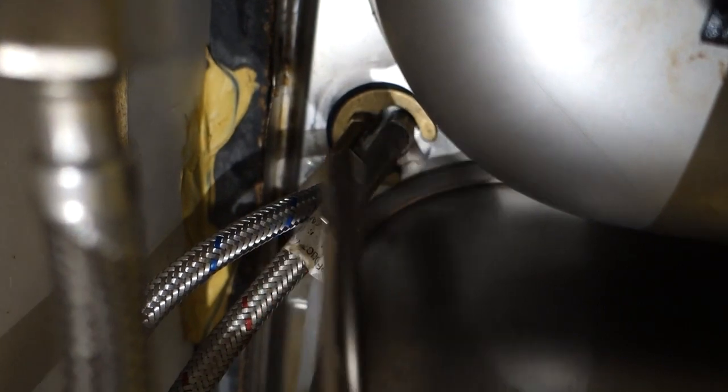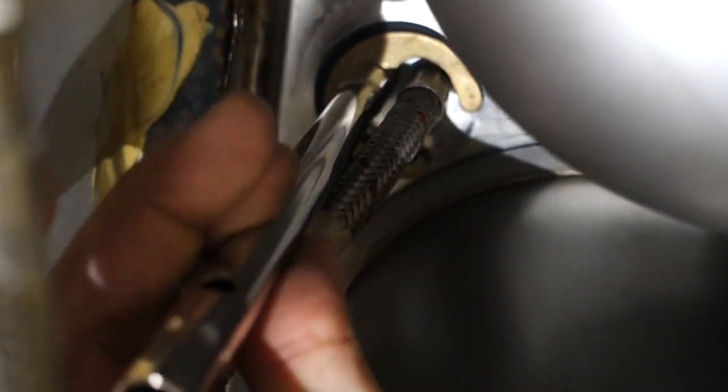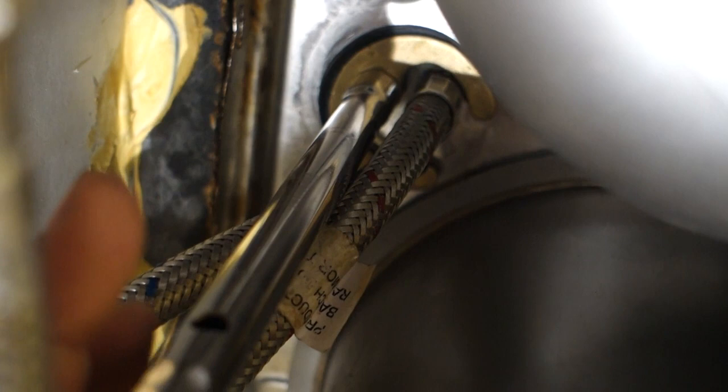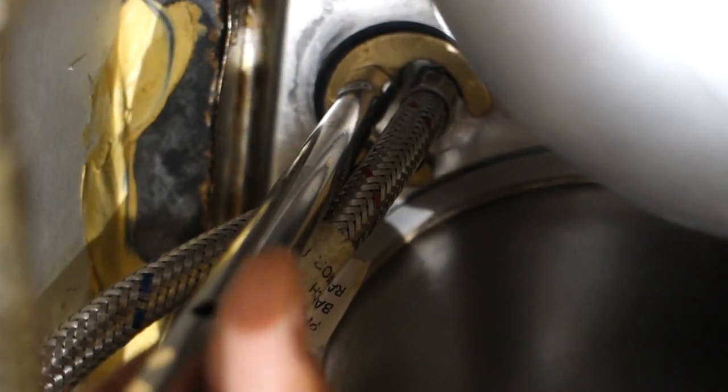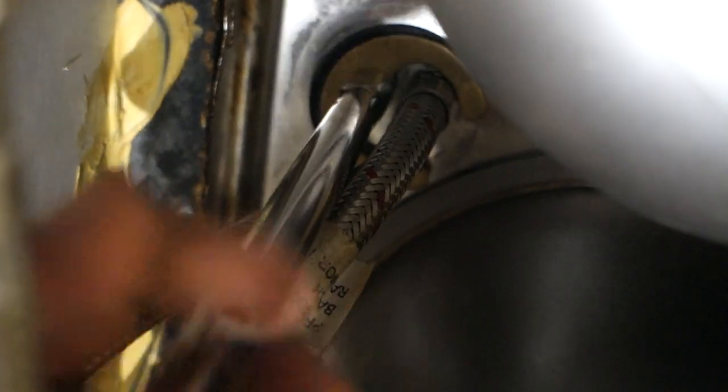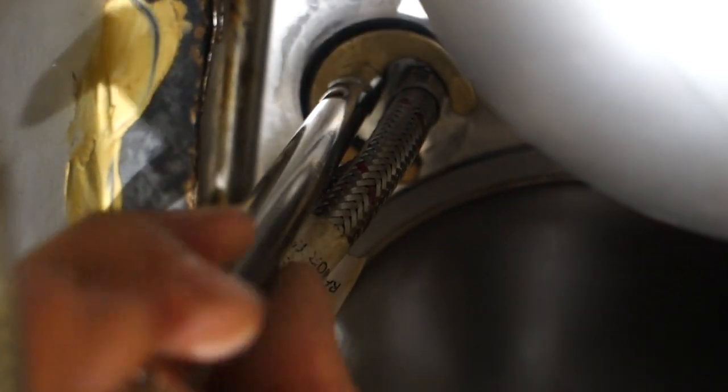So we'll take our tube spanner, slot that over the threads, push it up and then we're going to take our fingers and we're going to get this on hand tight first. So lefty loosey, righty tighty, good way to remember it. Turn it to the right in order to tighten it. So we'll turn that over until it bites on nice and tight with our hands.